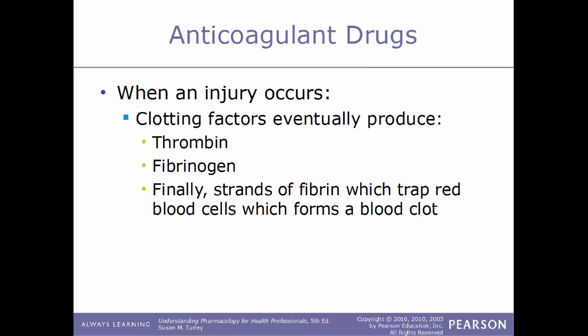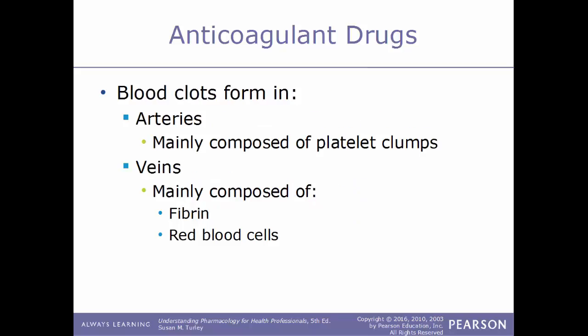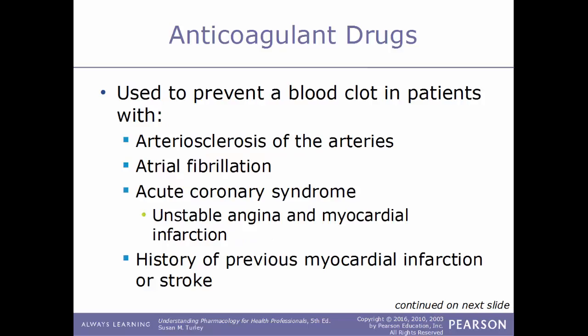Fibrinogen will end up being converted into a product called fibrin, which acts as a very sticky, very strong type of spider web. This netting of fibrin will help trap red blood cells as they go by the injured area, collecting all these cells to help form a blood clot. Blood clots can form in arteries and in veins. When they form in arteries they are mainly composed of platelet clumps; when they form in veins they are mainly composed of fibrin and red blood cells.